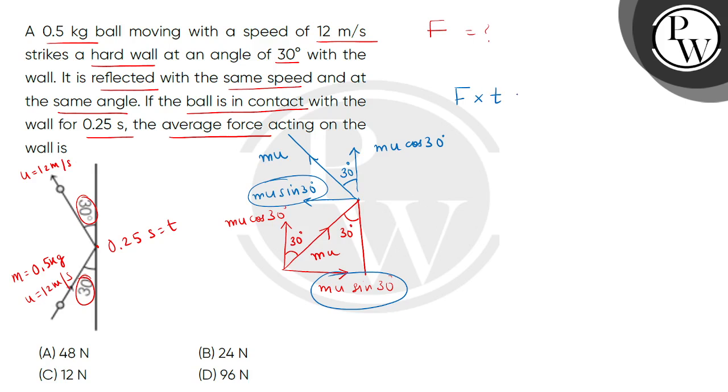So we can take impulse, that is force multiplied by time, is equal to change in momentum. We can take it here, that force times 0.25 seconds equals the change in momentum. Now change in momentum, if we look at the vertical components, these two are in the same direction, so the change in the vertical components will be zero. And horizontally, what will it be? So it will be minus mu sin 30 degrees minus mu sin 30 degrees.